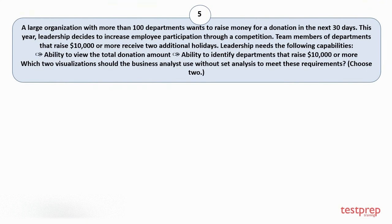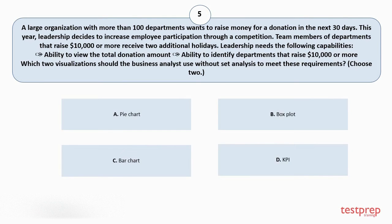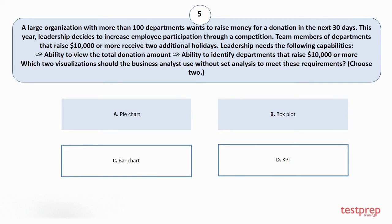Question number 5. A large organization with more than 100 departments wants to raise money for a donation in the next 30 days. Leadership decides to increase employee participation through a competition. Team members of departments that raise $10,000 or more will receive two additional holidays. Leadership needs the following capabilities: 1. Ability to view the total donation amount. 2. Ability to identify departments that raise $10,000 or more. Which two visualizations should the business analyst use without set analysis to meet these requirements? Choose two. Your options are: A. Pie chart. B. Box plot. C. Bar chart. D. KPI. The correct answers are option C and D.